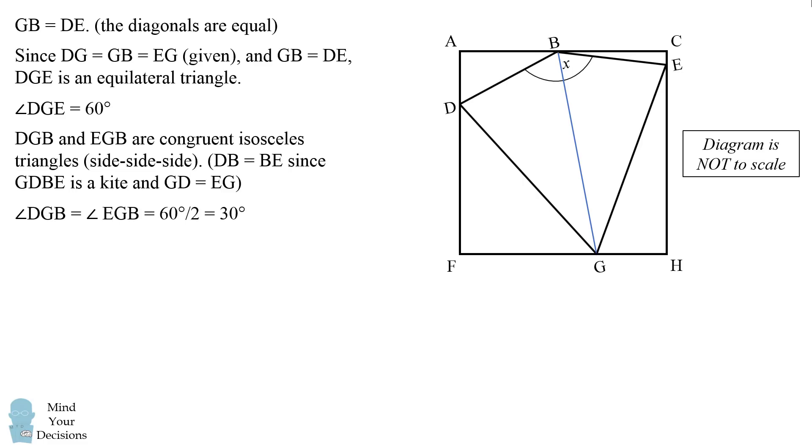Therefore, angle DGB is equal to angle EGB, which is equal to half of 60 degrees, which is 30 degrees. We can now proceed as before, where we have the remaining angles are all equal to each other, and therefore they're all equal to half of X.